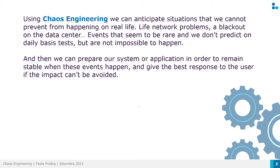With Chaos Engineering, we can anticipate situations that we cannot prevent from happening in real life — like network problems, blackouts in the data center, events that seem unlikely and that we don't predict on a daily basis, but are not impossible to happen. We can prepare a system or application to remain stable when these events occur and give the best response to the user if the impact can't be avoided.